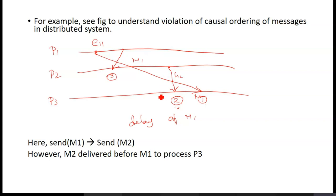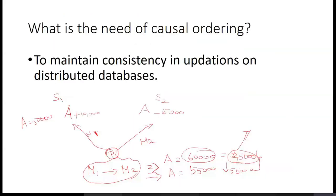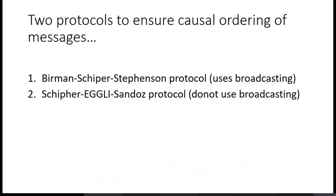So what should happen? What we have to do is, we have to make the M2 to wait till M1 get delivered. So instead of delivering M2 at this moment, the process should be postponed. The message delivery of second should be postponed till M1 get received by P3. There are two protocols which take care of this particular problem.